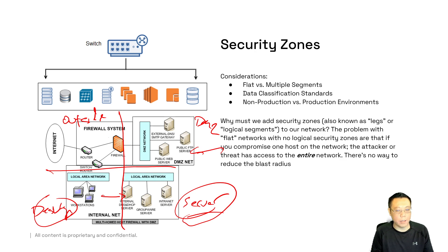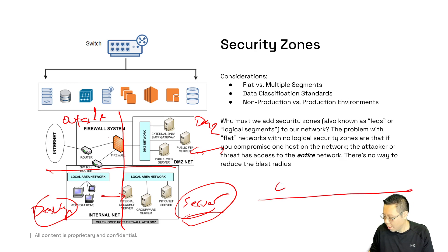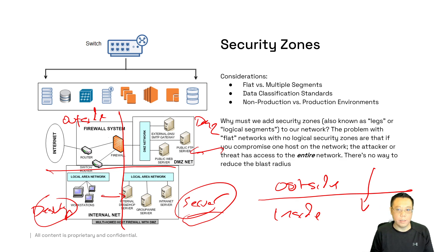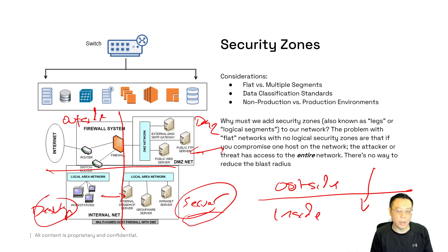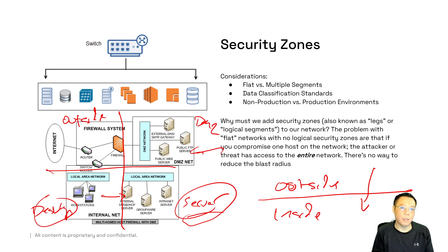Networks without security zones — just the concept of inside and outside like your home network — are flat networks. If you only have an inside with a wireless AP and no multiple security zones (multiple Layer 3 networks), you might be compromised completely. If someone gets to one workstation, they can hop into other east-to-west boundaries and the firewall can't do anything because you don't have multiple home zones.